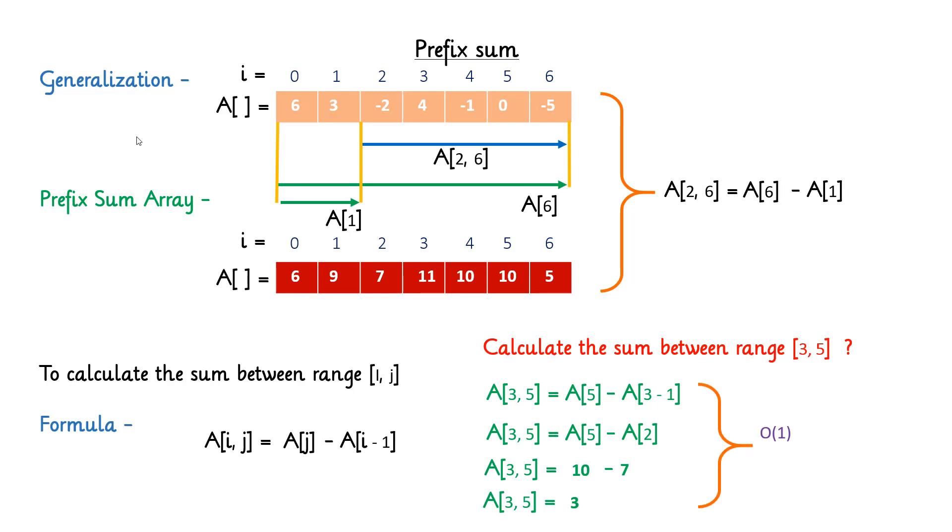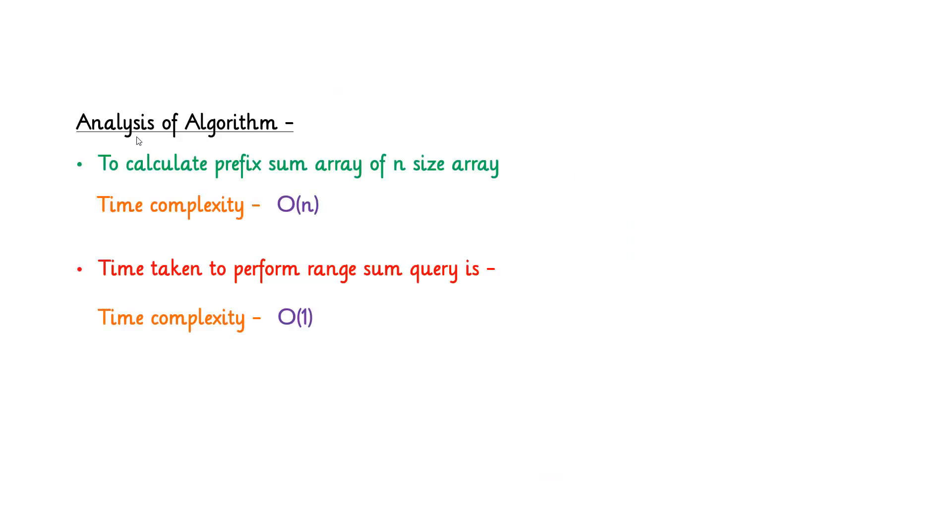Let's analyze this algorithm. To calculate prefix sum array of n size array will take O(n) time and each query will take constant time to execute. So the total time taken to preprocess the array and to perform range query is O(1).